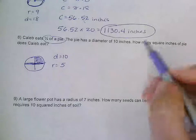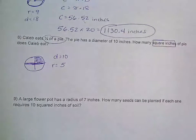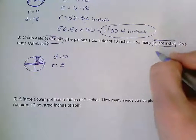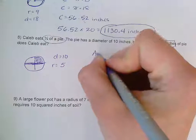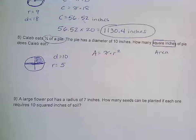I also noticed here that it says how many square inches of pie does he eat? And the only thing that we measure in square inches is area. So this tells me I need to solve for area. Our area formula is area equals pi times radius squared, or radius squared times pi, either way.